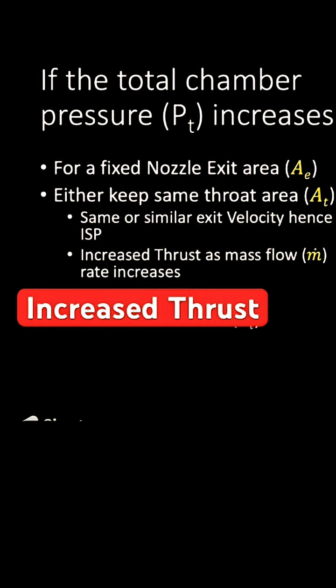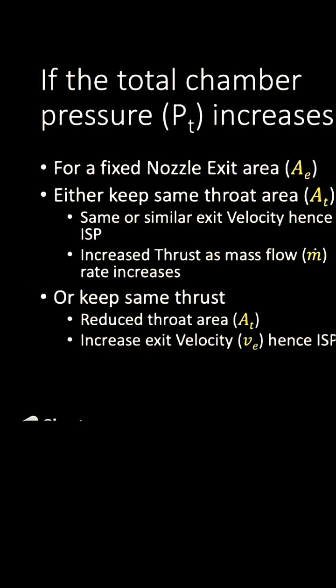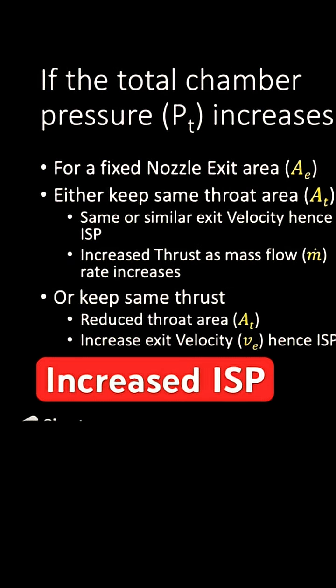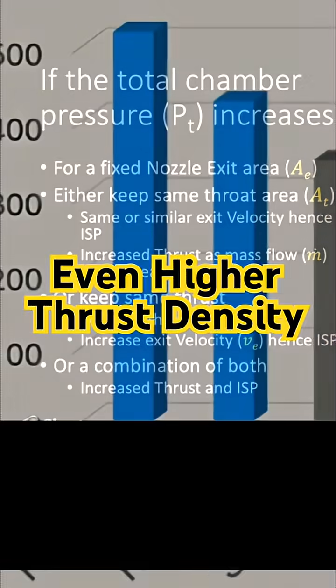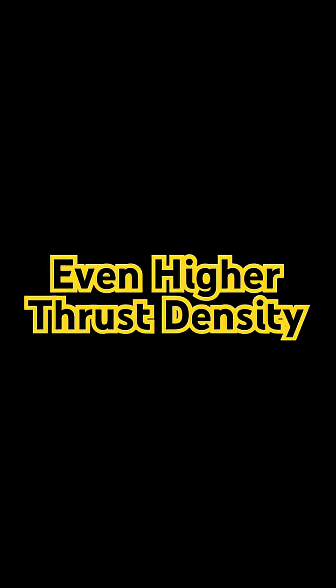Option number two: maximize the efficiency. To do so, the throat area needs to be reduced to have a higher expansion ratio, a higher exit velocity, and an increased efficiency. But looking at the figures, it looks like they've gone to maximize the thrust with a minimal increase in ISP.